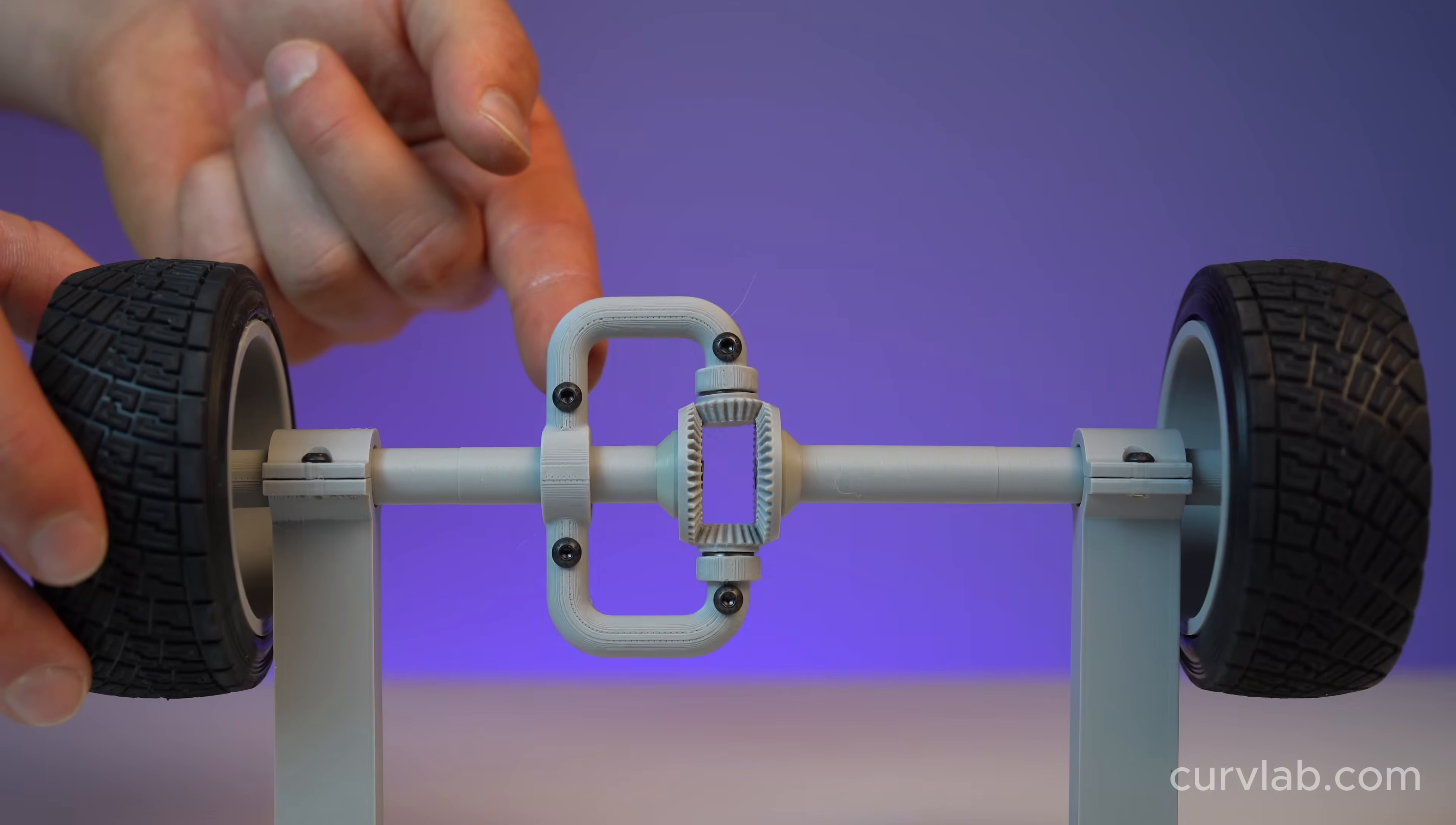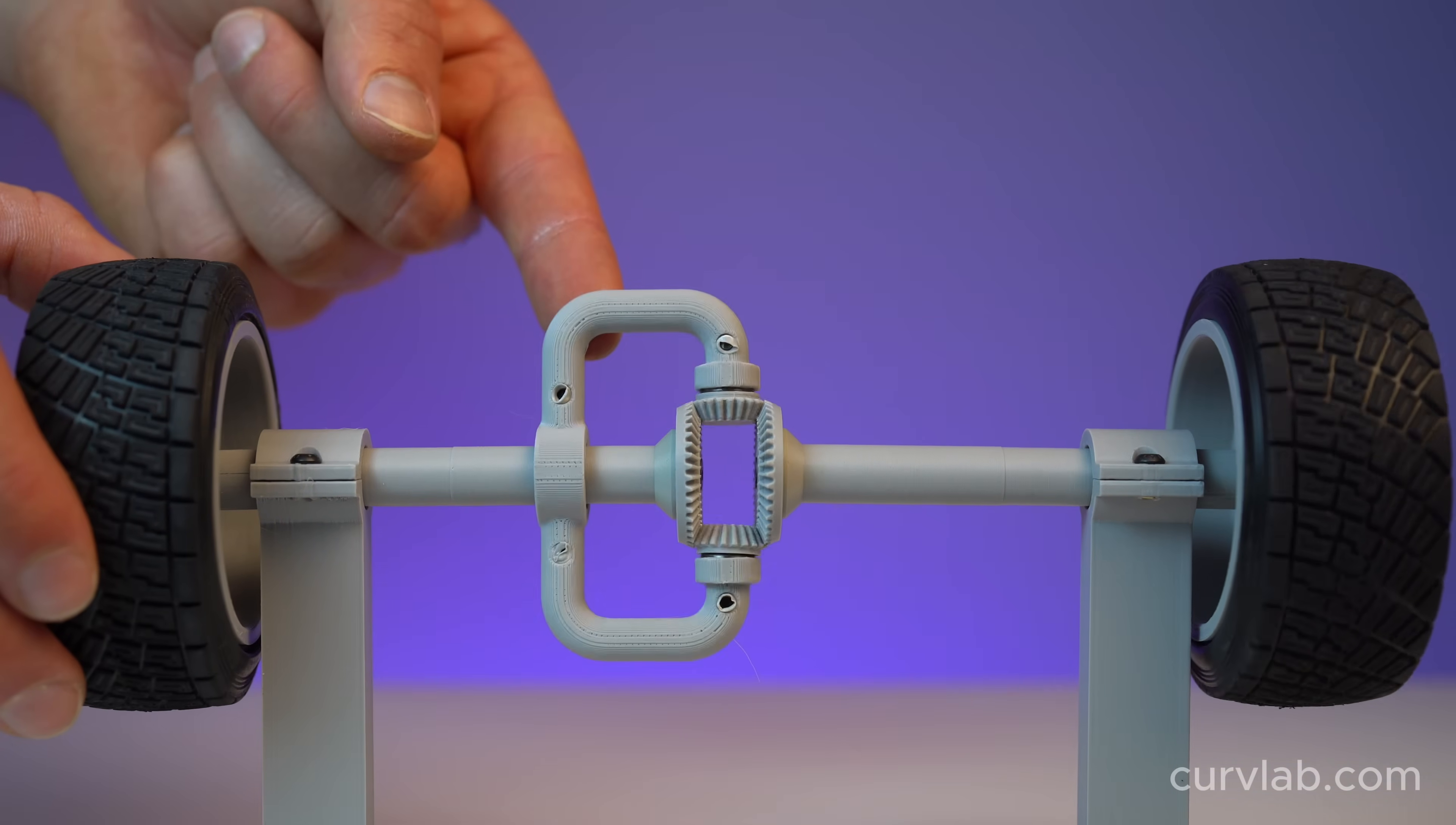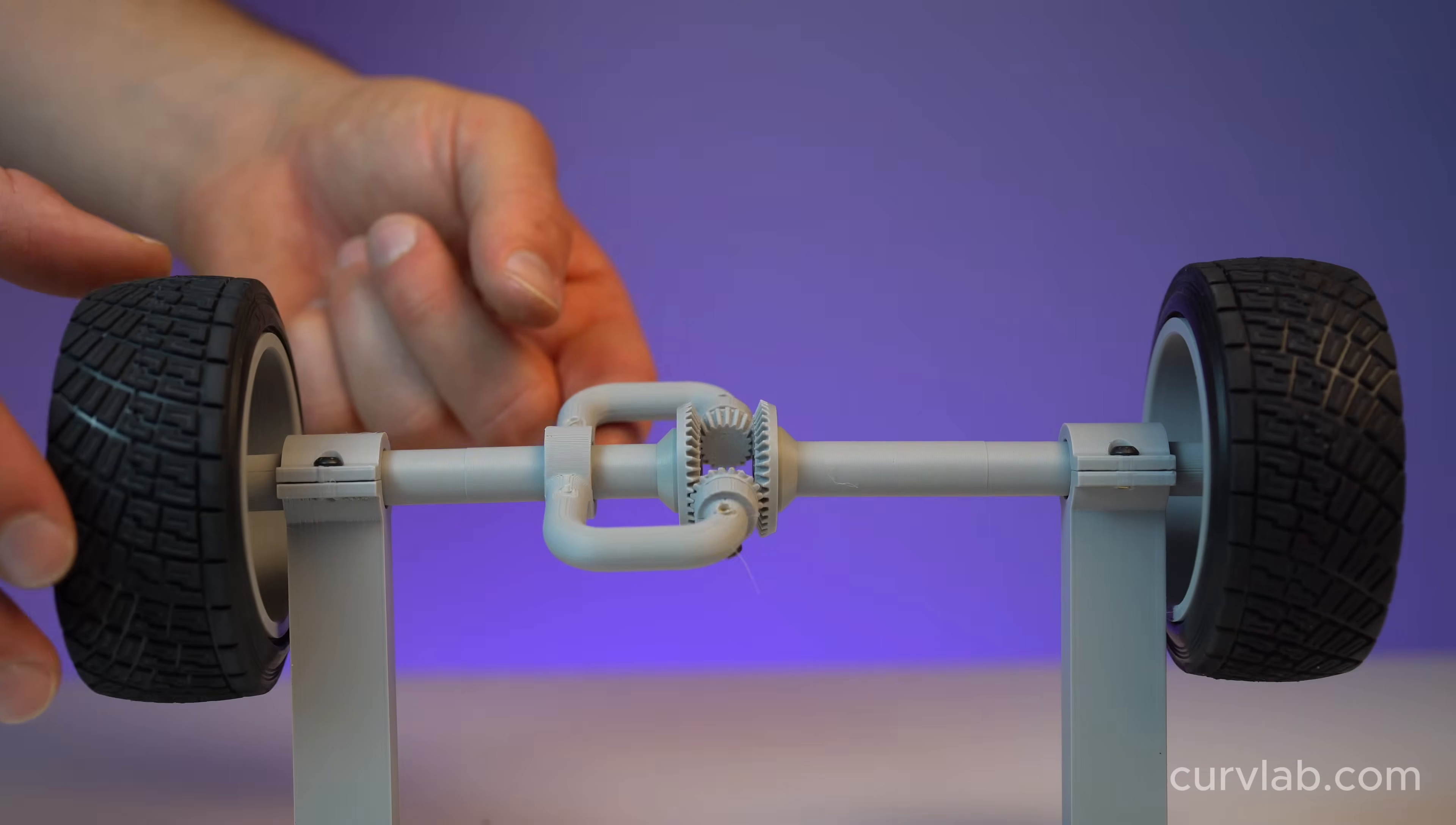Notice how when one wheel is stopped, power smoothly and seamlessly transfers to the one wheel that's free. Right now, my fingers are driving this double crossbar and putting power into the wheels.